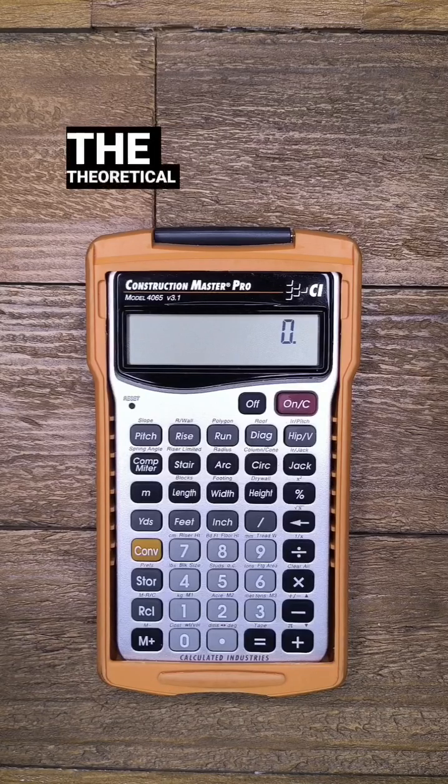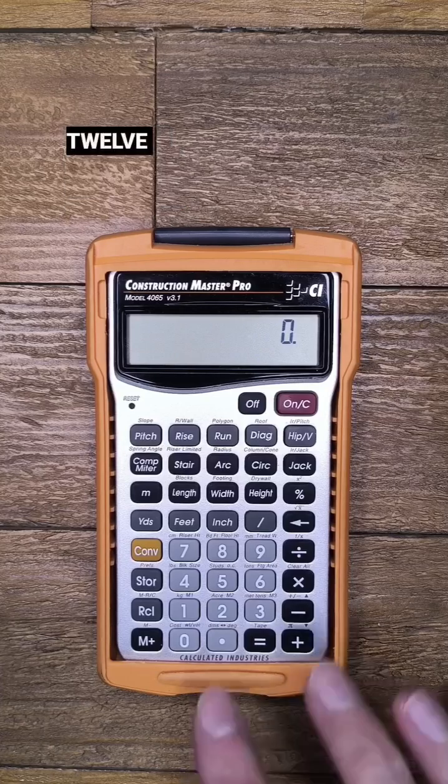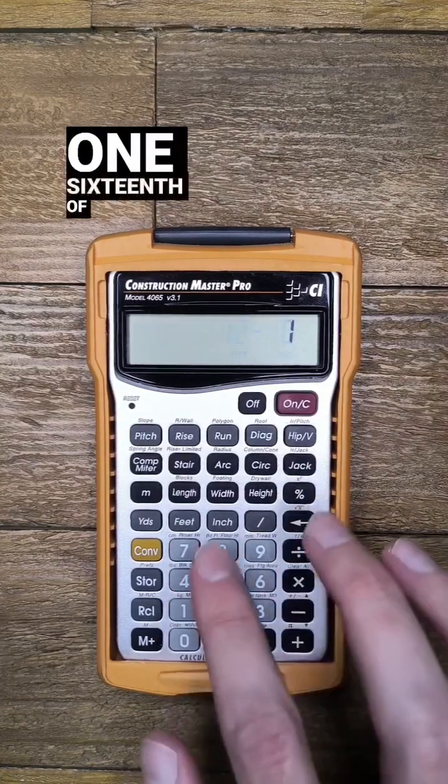So enter the theoretical run of your king common rafter, let's call it 12 feet and subtract one and one sixteenth of an inch.